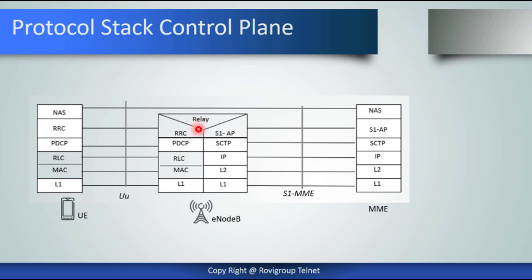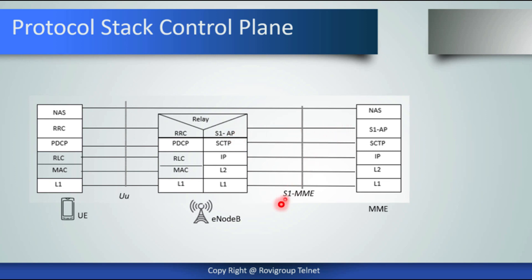At the eNodeB, we have a relay function between the RRC and the S1AP protocol between the eNodeB and the MME. Similarly, the PDCP maps to the SCTP protocol at the eNodeB side. Then we have the IP layer, layer 2, and layer 1 between the eNodeB and the MME. The medium between the UE and eNodeB is the radio interface, while the medium between the eNodeB and MME can be microwave or fiber connectivity, forming layer 1, layer 2, IP, SCTP, and S1AP.